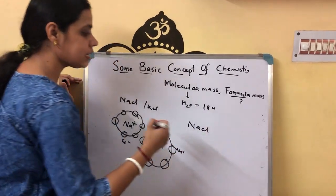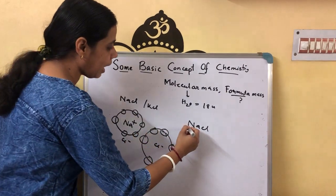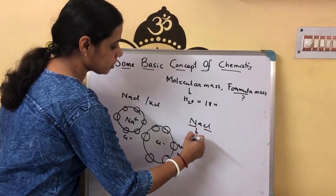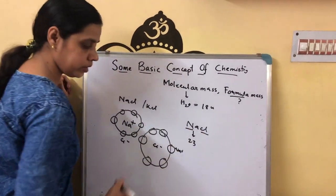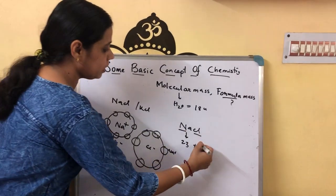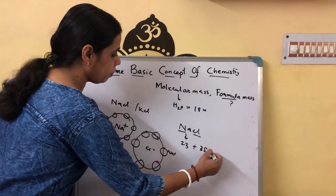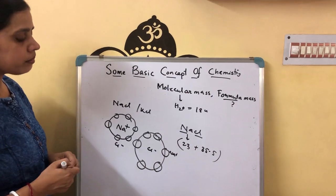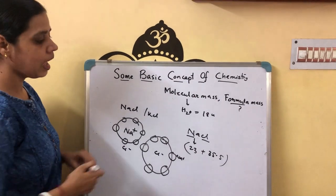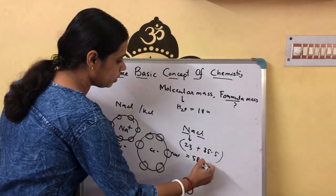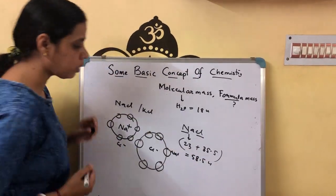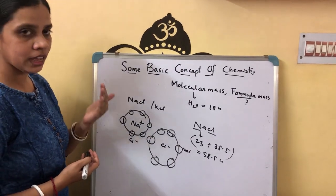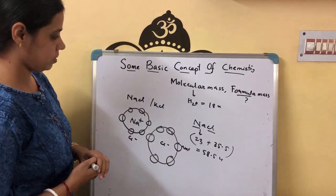So first I write their formula, then add their atomic masses. The atomic mass of sodium is 23 and the atomic mass of Cl is 35.5. We just place their atomic masses, add them, and get their formula mass. The unit is 58.5 unified mass.